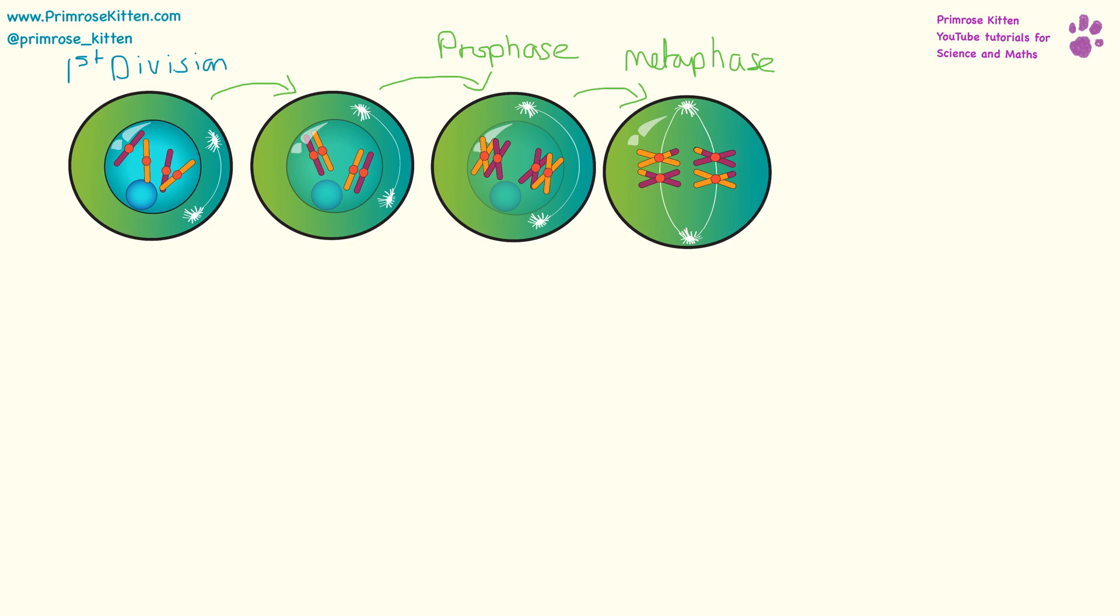They are then going to line up, and each pair of chromosomes is going to be connected to a spindle pole, and they're going to get pulled apart. This is where we have a big difference with mitosis, because instead of each arm of the chromosome going to each side, we have a whole chromosome pair going to each side.